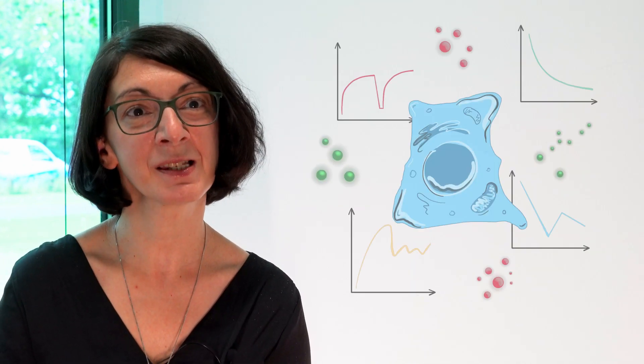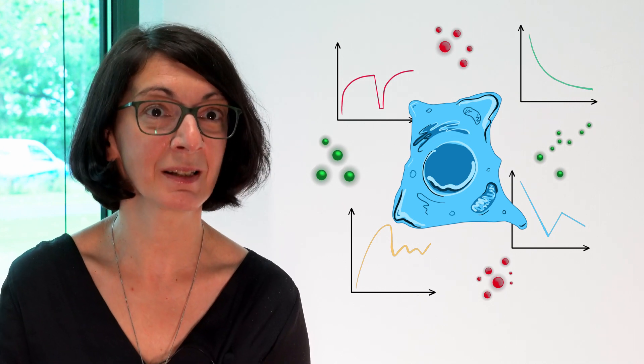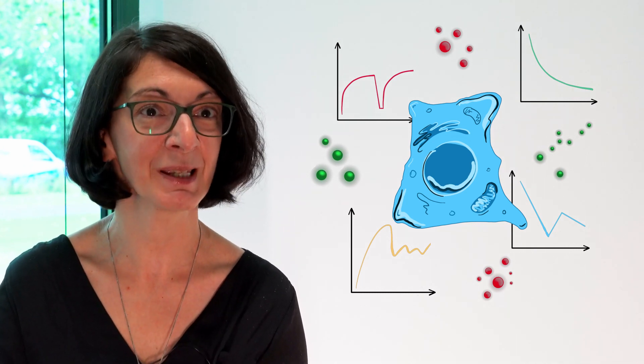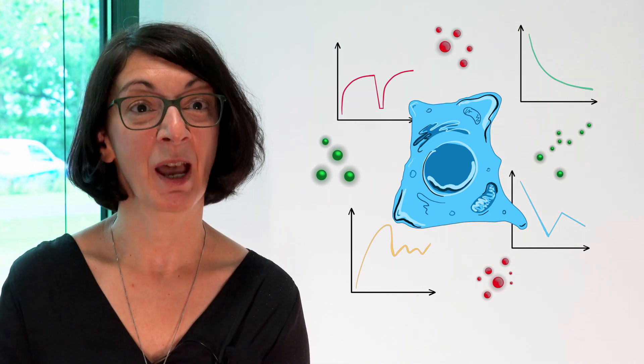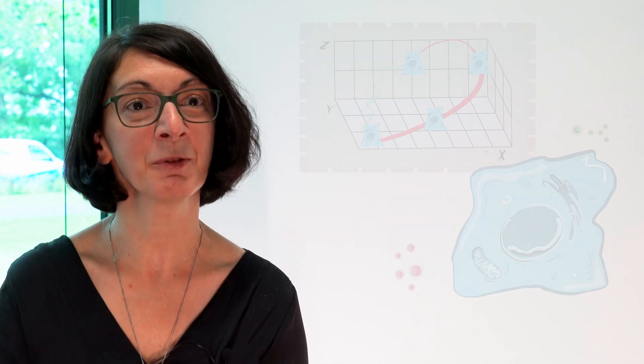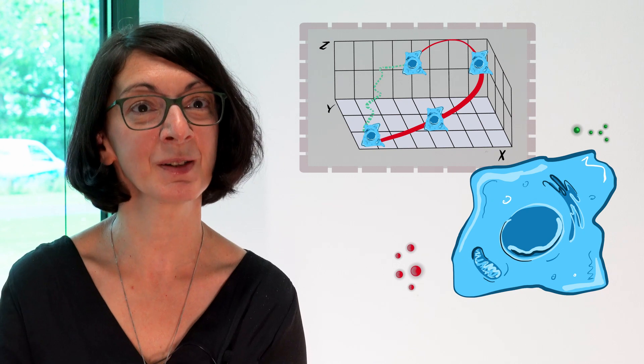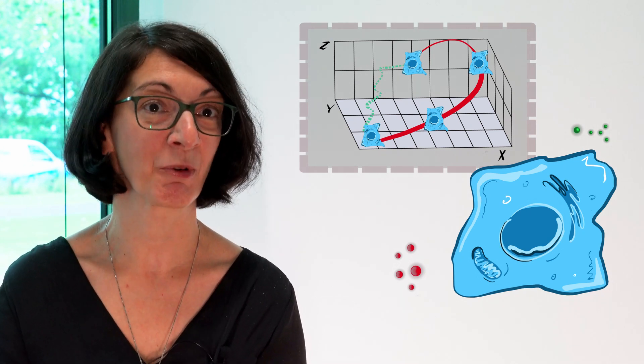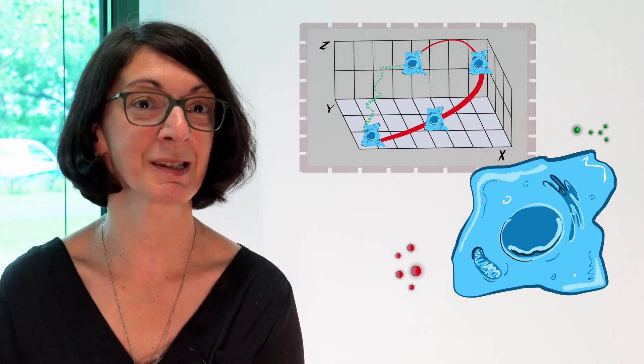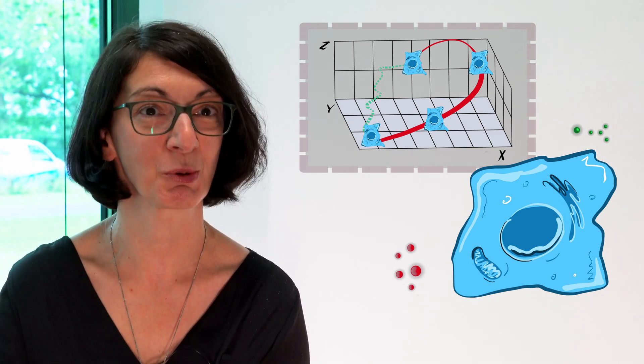They are continuously facing many chemical signals that change in time and space and they have to integrate these signals and they have to navigate in this changing environment, which means that even single cells have a form of working memory as the brain does in order to be able to process all these signals.